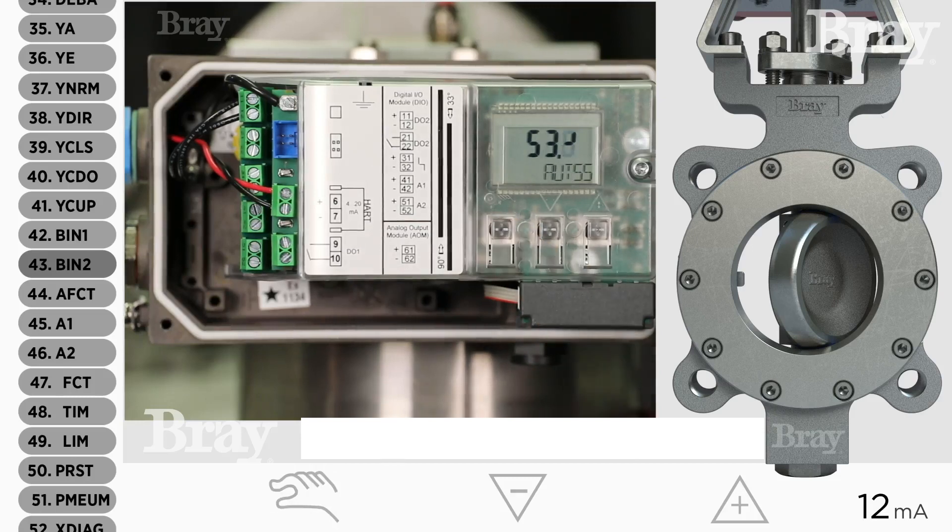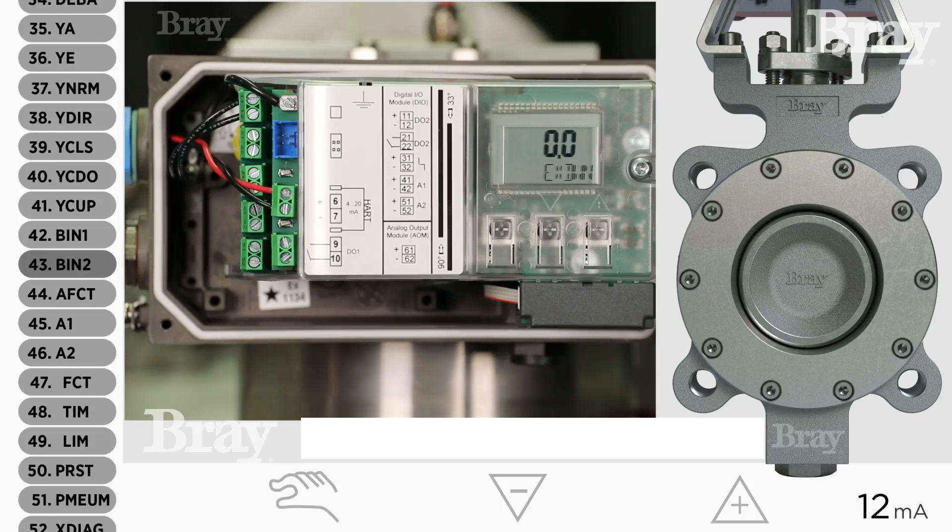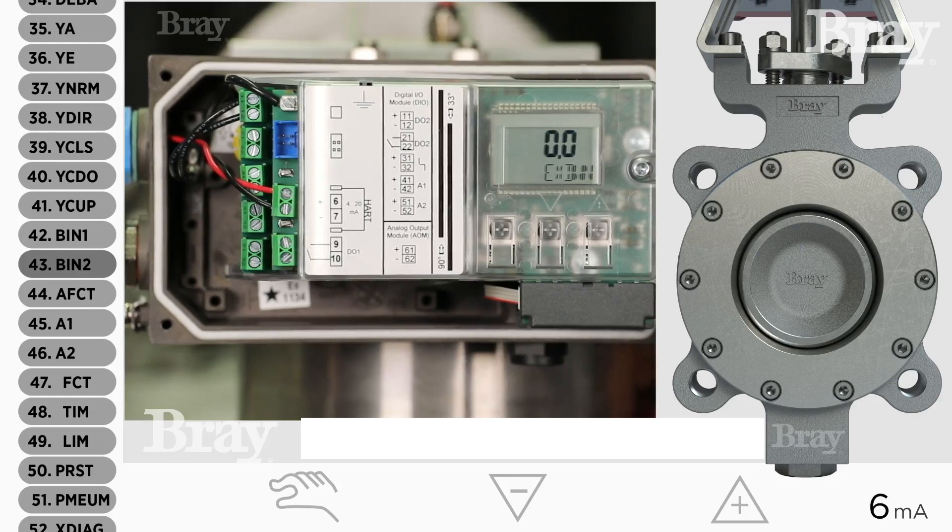So now when we turn the binary input on, it goes close. It goes full close and you get the external input. Right now loop power can change and it's ignoring it because the binary input is activated.